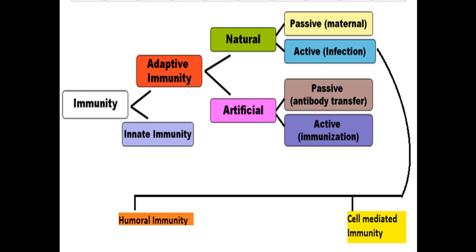Immunity is divided into adaptive and innate immunity. Adaptive immunity is further divided into natural and artificial. Natural immunity is divided into passive and active, and artificial is also divided into passive and active. Adaptive natural active immunity is further divided into humoral immunity and cell-mediated immunity.